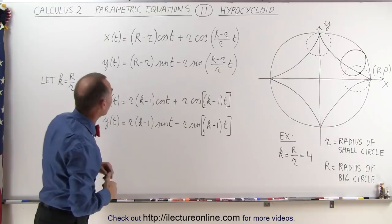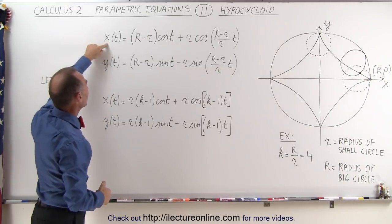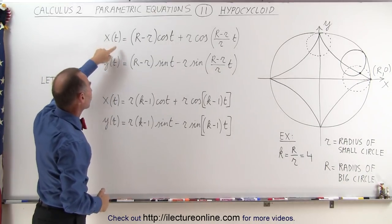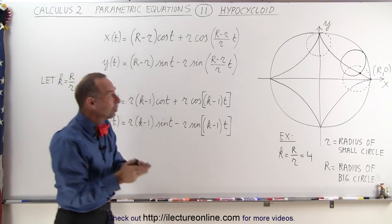So how do you find the x and y positions of that point anywhere along this curve defined as a hypocycloid? Well, these are the parametric equations, the x-position and the y-position as a function of t. t in this case would be the angle.